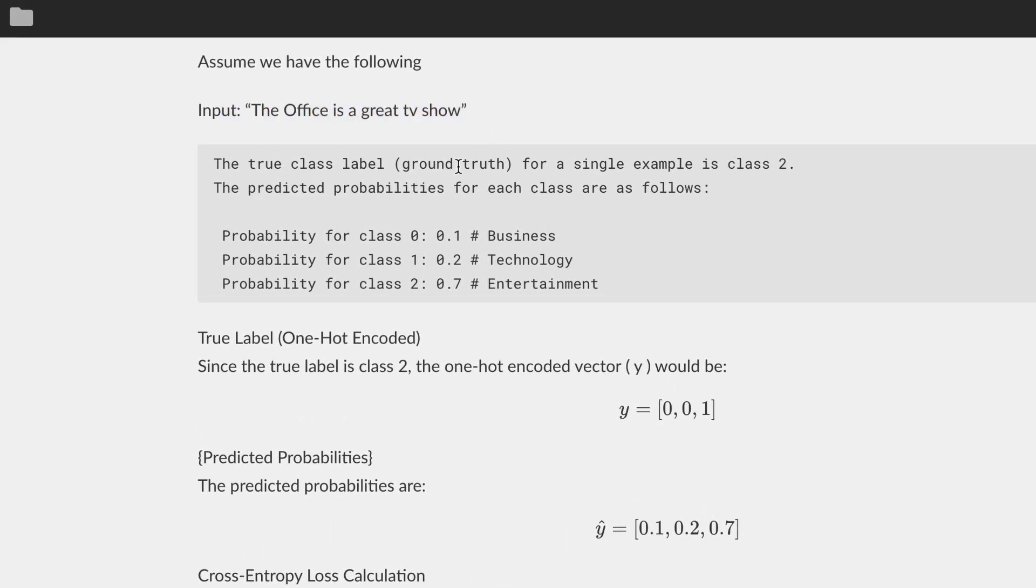Over here, we have the true class labels for the predicted probabilities. In this case, our model was 70% sure that The Office is a great TV show belongs to entertainment. And that's right, because it doesn't belong to the business or technology category.